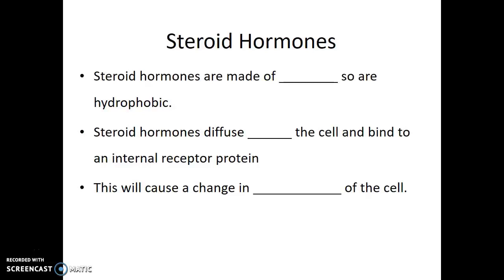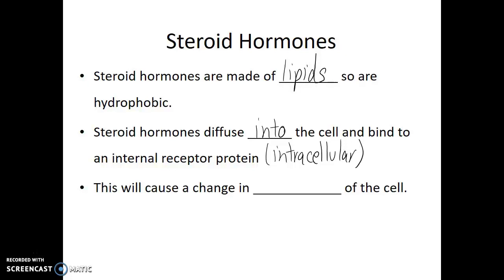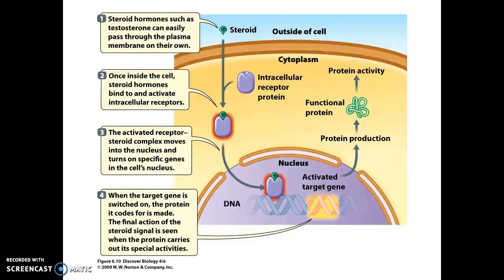An example of a hydrophobic hormone would be a steroid hormone. Steroid hormones are made out of lipids, specifically those ring lipids like cholesterol. The steroid hormone diffuses into the receiving cell and binds to an internal receptor protein — we use the term intracellular to state that the receptor is inside of the target cell. In this diagram, we can see the steroid hormone entering the cytoplasm of the receiving cell, binding with that intracellular receptor. Together, that complex enters the nucleus, a section of DNA is activated, resulting in the production of a new or different protein, giving the cell some new behavior or action.